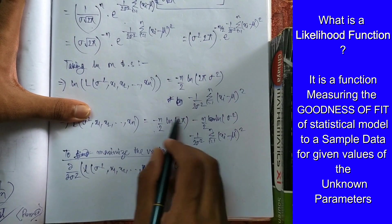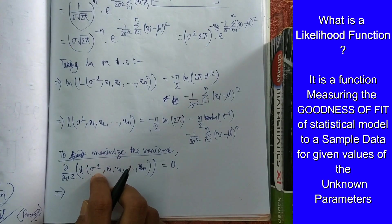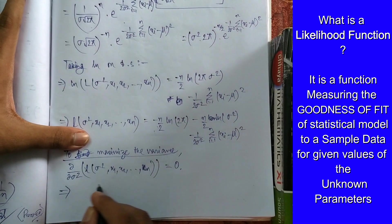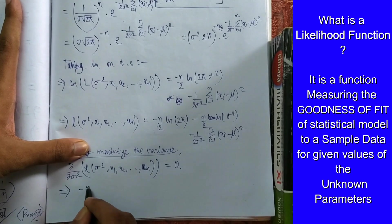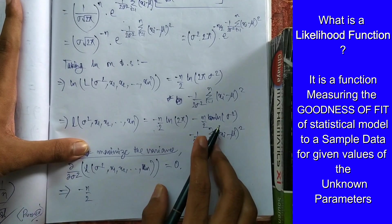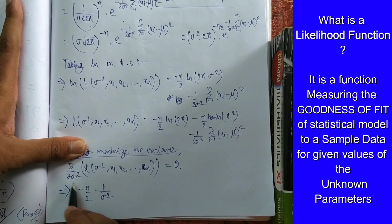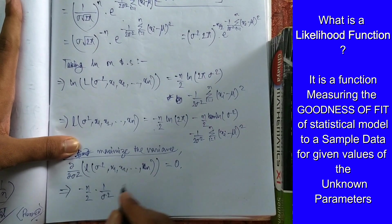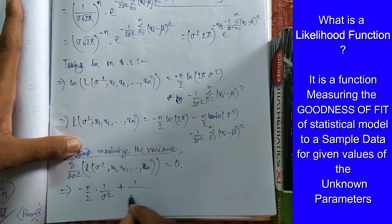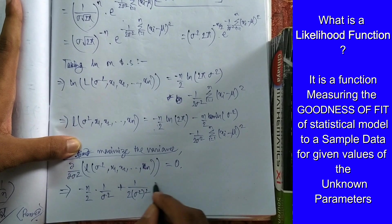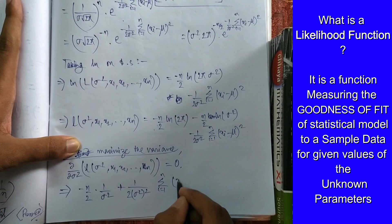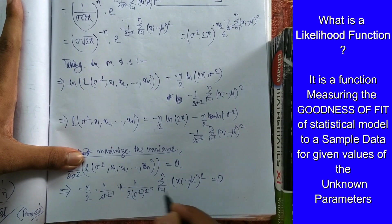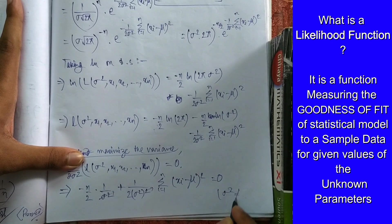Taking the derivative: the first term −(n/2) ln(2π) is a constant, so it becomes 0. For the second term, −(n/2) ln(σ²), the derivative with respect to σ² gives −(n/2) · 1/σ². For the third term, the derivative of −1/(2σ²) with respect to σ² gives +1/(2σ⁴). Setting the whole expression equal to 0, and since σ² ≠ 0, we can cancel σ² terms.